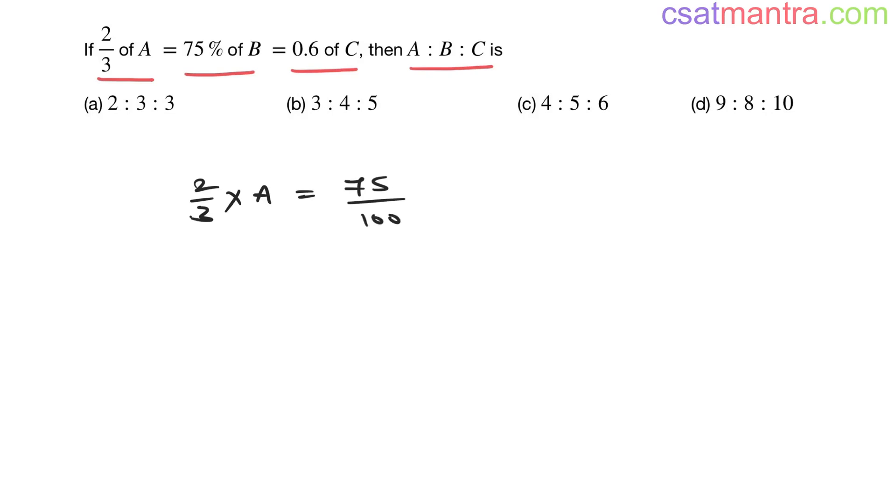75 by 100 of means multiplication B. 0.6 you can write it as 6 by 10 of multiplication C.